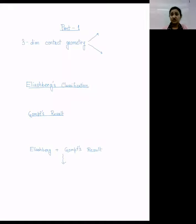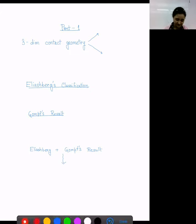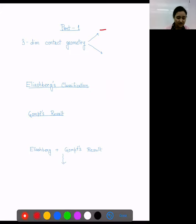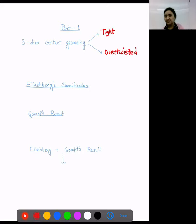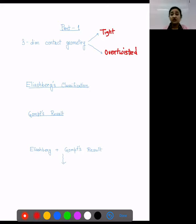In three-dimensional contact geometry, we have a very nice dichotomy, which is tight versus overtwisted. I will define this later. If you look at the literature, you'll see that tight contact structures grab a lot of attention. Tight contact structures are rare, and the classification of tight contact structures is a very difficult and interesting problem in contact geometry.